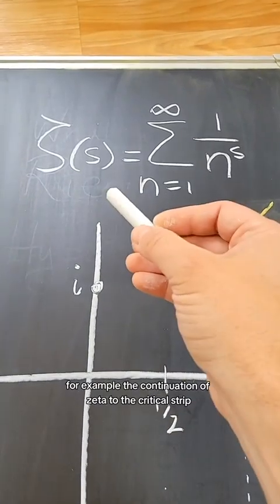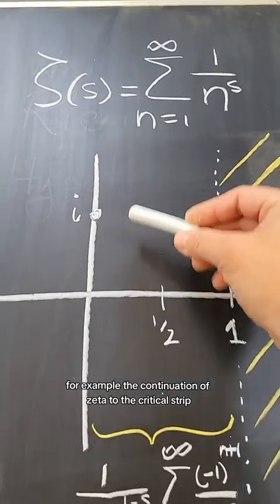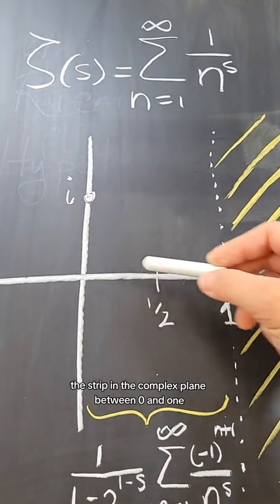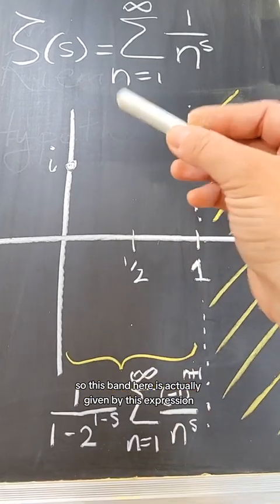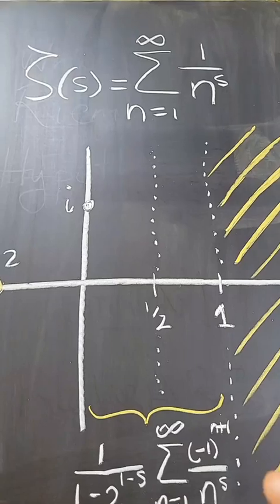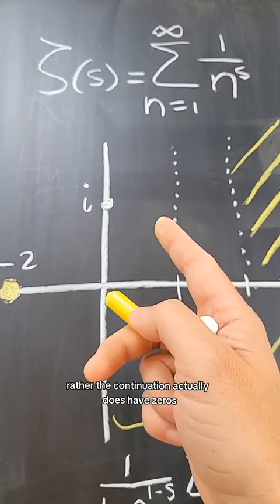For example, the continuation of zeta to the critical strip, the strip in the complex plane between zero and one, so this band here, is actually given by this expression. The Riemann zeta function, or rather the continuation,